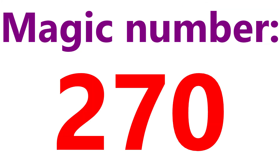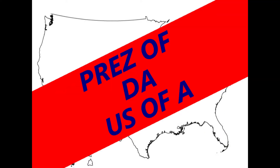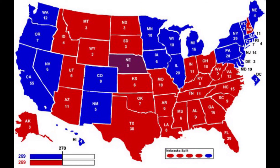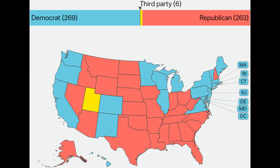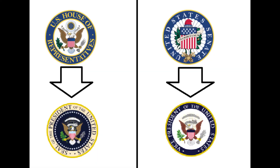Whichever candidate reaches the magic number of 270 electors is declared President of the United States of America. Of course, there is the chance of a tie — 269 to 269 — or that neither candidate gets a majority in the college. If this happens, the President is chosen by the House, and the Vice President is selected by the Senate.